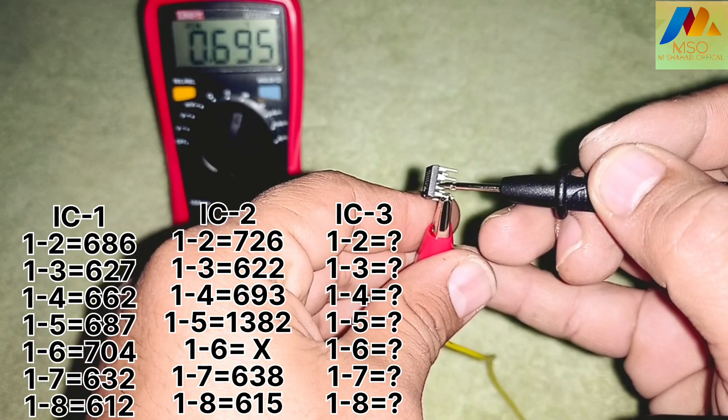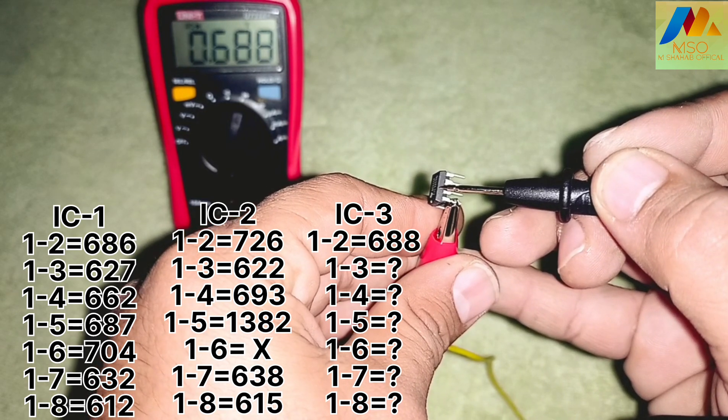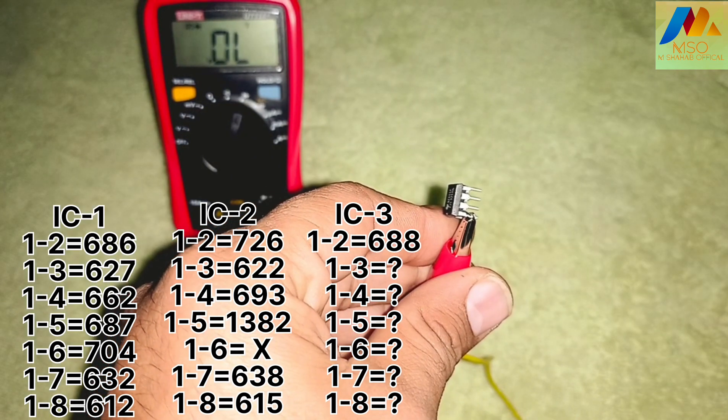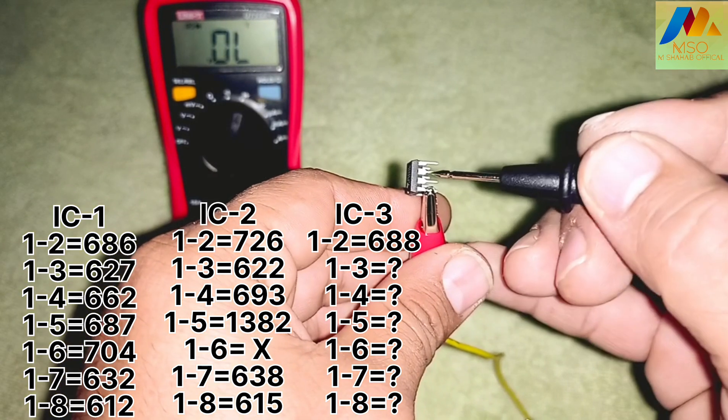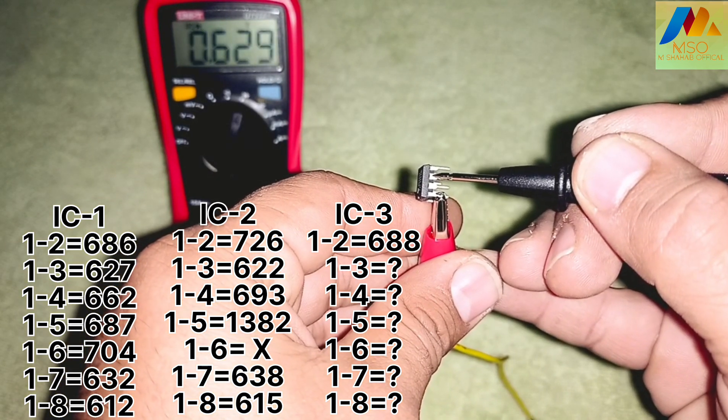Now we will connect the negative probe of the multimeter to 3rd IC pin number 2, 3, 4, 5, 6, 7, and 8 in sequence and note the readings.